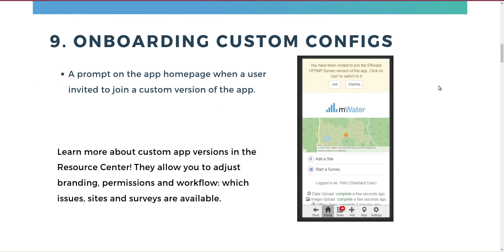Number 9, in the app again: onboarding custom configs. There's a prompt on the app homepage when a user is invited to join a custom version of the app. Custom configs allow you to adjust the branding of the app, as well as the permissions and the workflow — which issues, which sites, and which surveys are available at which point. You can customize the app homepage, show a particular set of surveys, hide all the rest, and choose which site types to show.